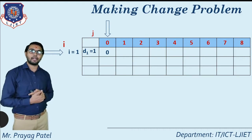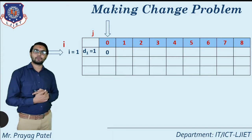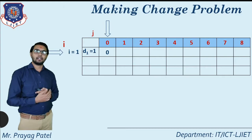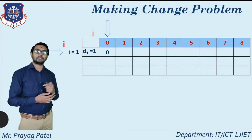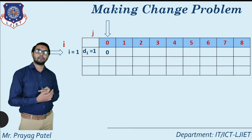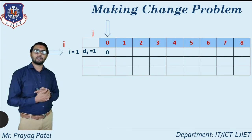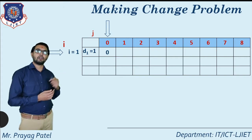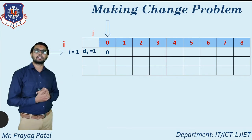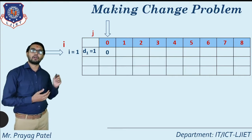In our previous video lecture we already found the answer for the making change problem — how to find the total number of coins and which coins are selected. Now we check and compare this answer from our previous lecture. Using the shortcut method you can directly find the value of each element in the table. Consider the table name as C, then find the value of C[1][0], C[1][1], up to C[1][8], then the second row, then the third row.